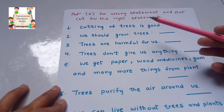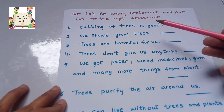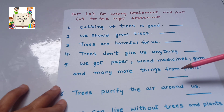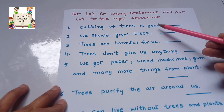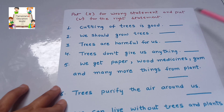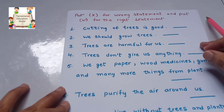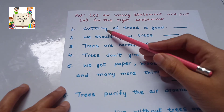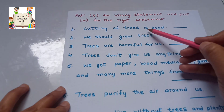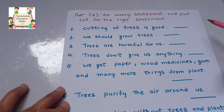Put a cross for wrong statements and a tick for right statements. Let's start. Listen to me very carefully. Cutting down trees is good — tell me, is cutting trees good? No. So this statement is wrong, and we put a cross here.